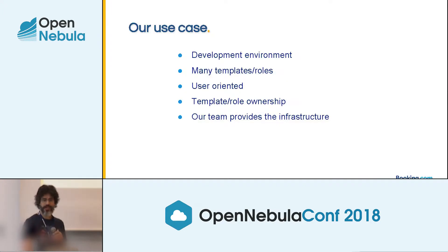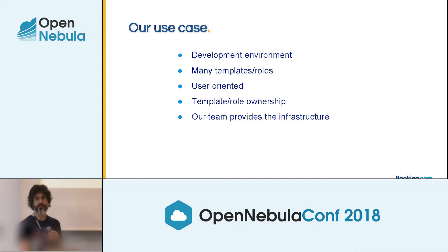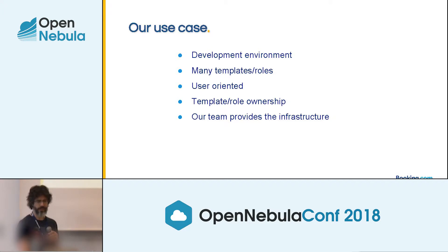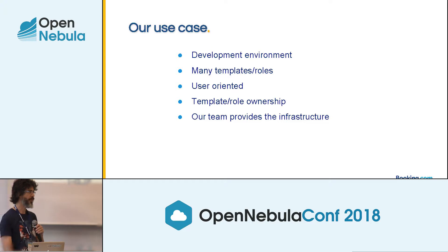I want to talk about our use case. It's our developer environment — not production, not QA. Our users are developers. We have over 150 templates, which are roles for us. We are user-oriented: the user owns the VM, disposes the VM, or does whatever they want with it. But we also have owners of the templates and roles — we are not the owners of them, people need to take care of them. Our mission is just to provide infrastructure.